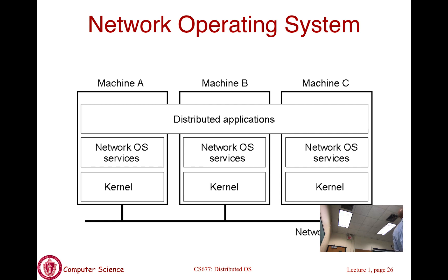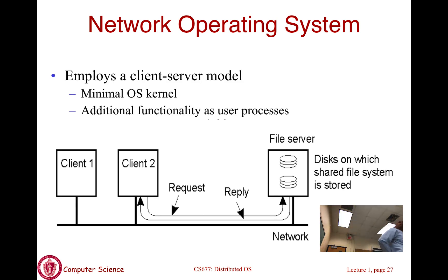The presence of these nodes is visible to the application and has to be explicitly managed by the user or the application. That is a network OS. An example of one such application is essentially a file server. You have your files stored on one server, and the other machines run a network OS that allows them to access files stored on another server. An example of such a file system could be NFS, or Network File System, which we will cover when we get to the file systems component of this class. The OS enables the clients to access files on another machine, and the presence of this server is visible to the user because you see network volumes mounted from the machine.